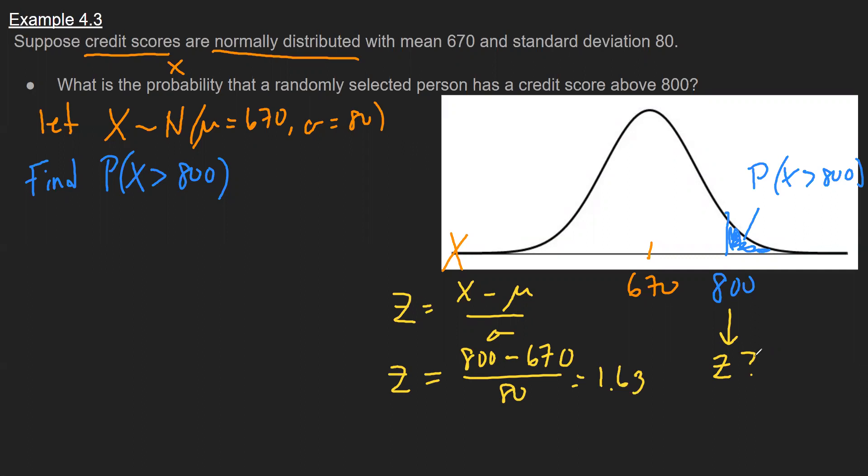So equivalently here, the chance that X is over 800 is equivalent to the chance that my z-score is over 1.63. And if you recall the video where we talked about reading the z-table, it outputs areas to the left. So that means I want to use my complement property here. And then now I can just look up this value here on the table.